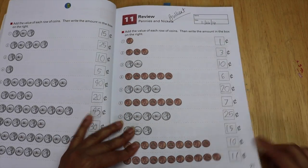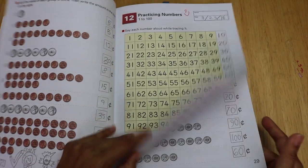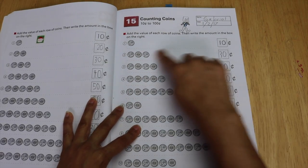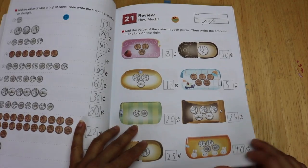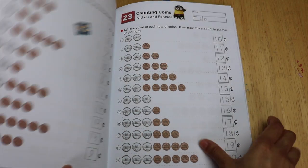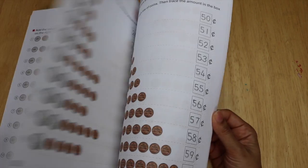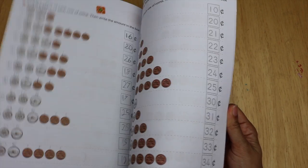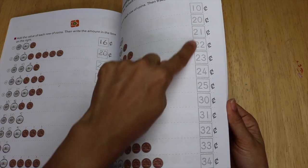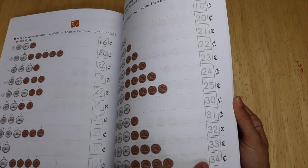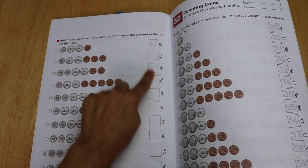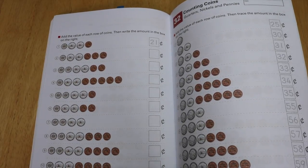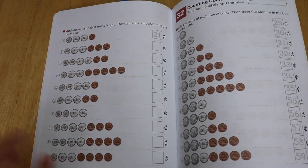And then it goes on and has reviews, and it goes through each of the coins individually and then starts mixing them for review, which I like. Again, very colorful book. It goes straight through and it continues its pattern, if you'll notice, of having the first page with it already pre-answered for them. So it teaches them and then the next page will have blanks so they have an opportunity to demonstrate their knowledge there.